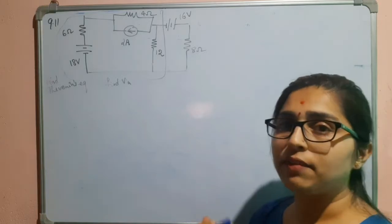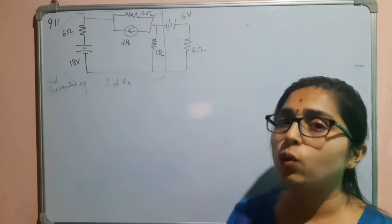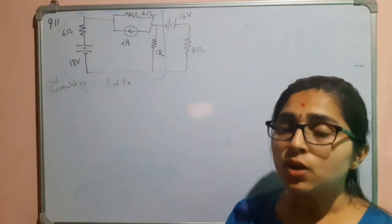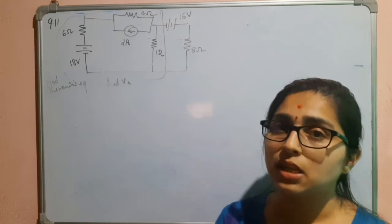So, to find the Thevenin's resistance, we will go for the first case that is the circuit which contains only independent sources. In this case what we have to do is, we have to make the independent sources equal to zero.